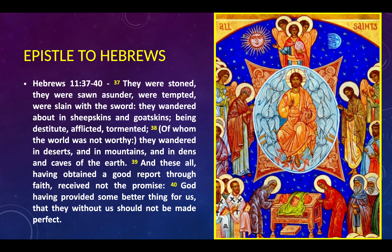On the right is the upper middle part of the image. Continuing in the Epistle reading, Hebrews chapter 11, verses 37 through 40: 'They were stoned, they were sawn asunder, were tempted, were slain with the sword. They wandered about in sheepskins and goatskins, being destitute, afflicted, tormented — of whom the world was not worthy. They wandered in deserts and in mountains and in dens and caves of the earth. And these all, having obtained a good report through faith, received not the promise. God, having provided some better thing for us, that they without us should not be made perfect.'